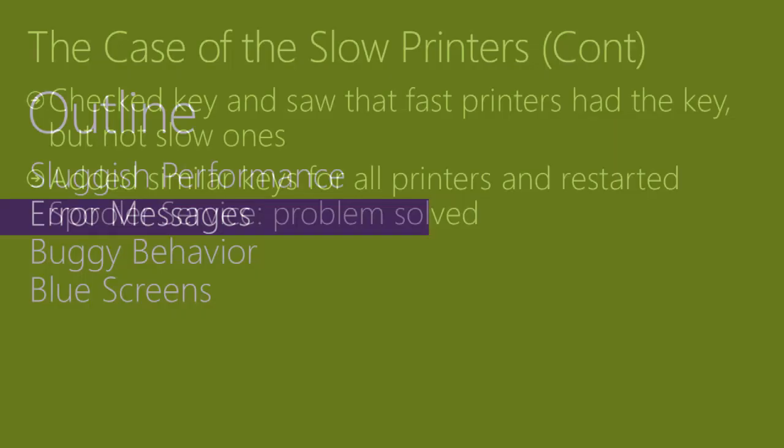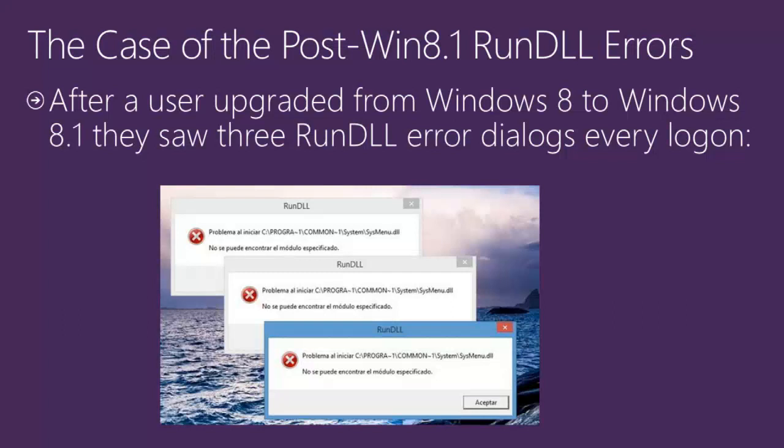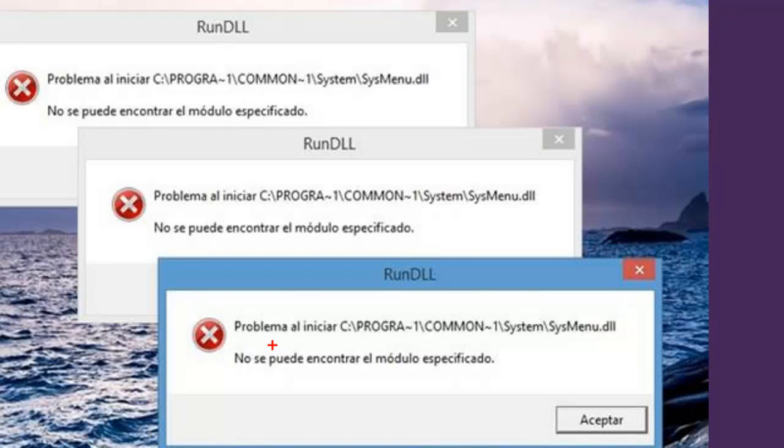Let's take a look at error messages now. A user upgraded their Windows 8 system to Windows 8.1 and saw three error dialog boxes pop up during every login. This is from a friend in South America, so the error messages are in Spanish — 'Problema al enseñar' — something about a path starting with C:\PRO.